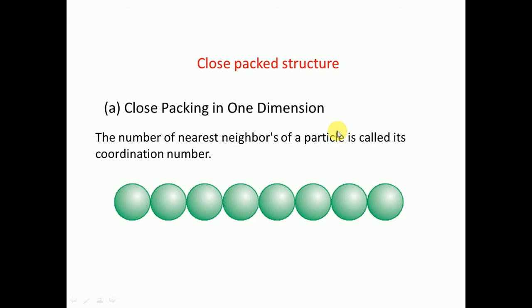Now we will go to the close-packed structure. First, we look at one-dimensional close packing - we consider atoms along a particular direction, like the x-axis, y-axis, or z-axis. If we consider an atom and count the coordination number, the number of neighboring atoms touching it will be the coordination number. For a 1D arrangement, we get a coordination number of two.